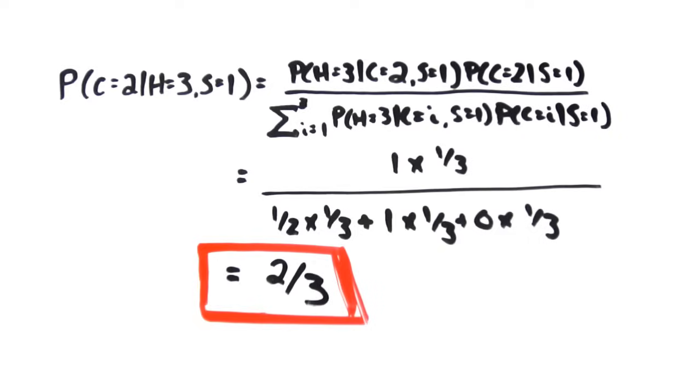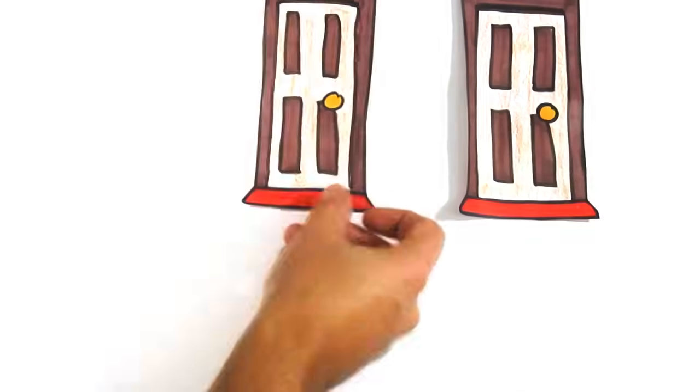Let's see it one more time using a chart. Here are all the possible scenarios. The car is behind door one, two, or three, and you have the choice of each three doors. This means there are nine possible outcomes.